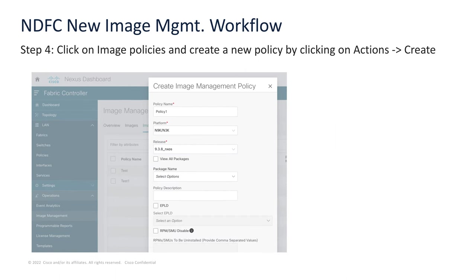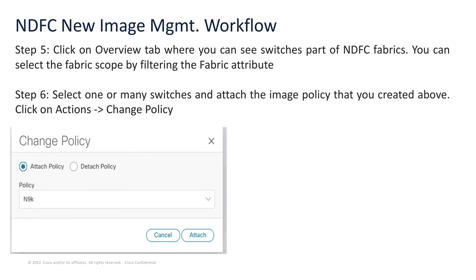Thereafter, we go ahead and create a policy by clicking on actions and create. The policy includes a policy name, the platform that it will be used on — in this example, N9K and 3K — the release, which gives you a drop-down of all the images uploaded into the repository. You then select the package name, EPLD, RPM, and other details. That is what the policy consists of.